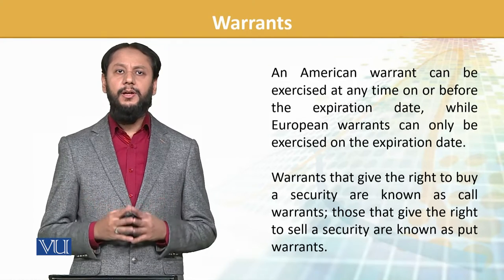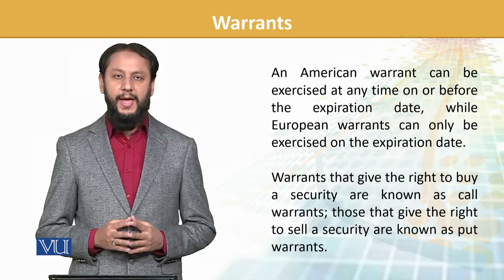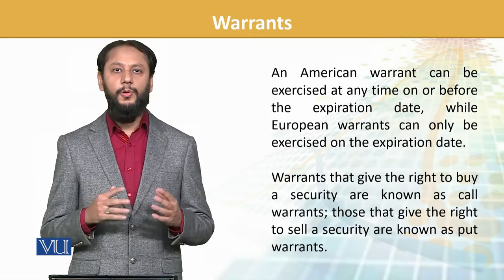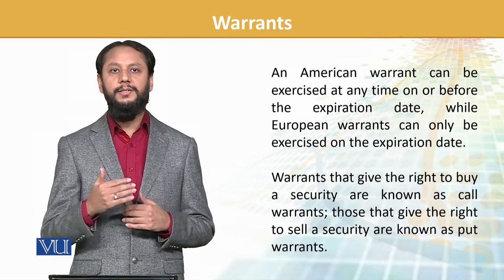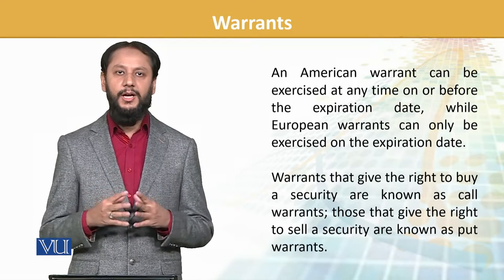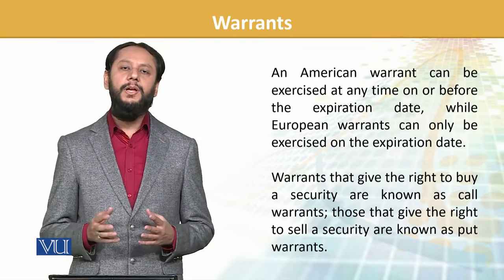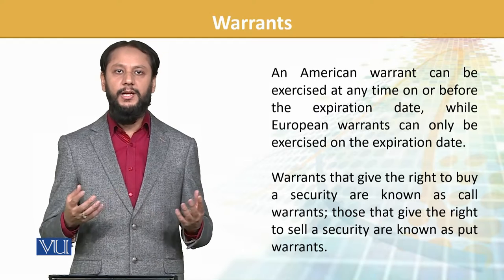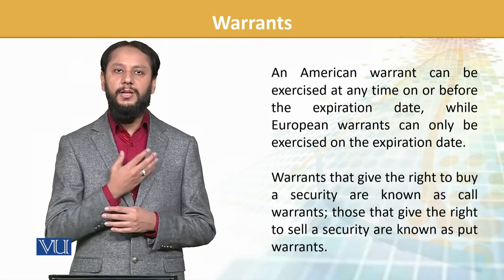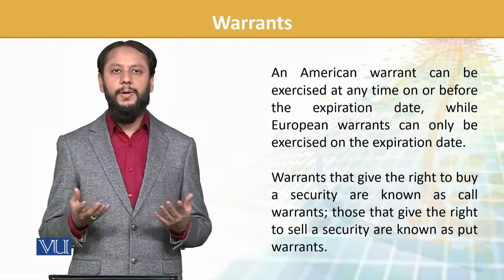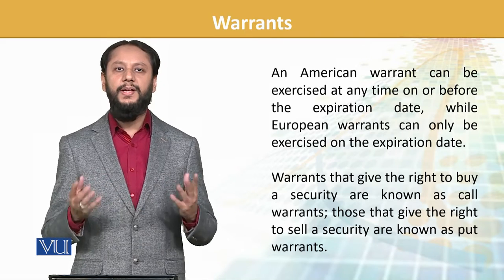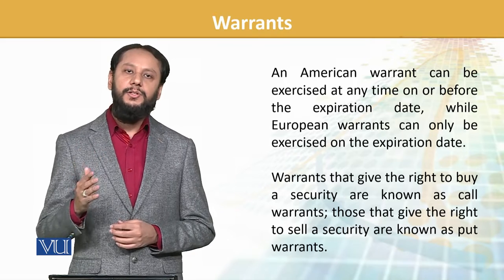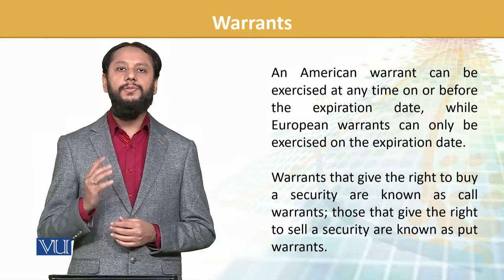There are two types, similar to what we discussed before — one is American and one is European. These are not related to countries or where they are traded; they are types with their own features. American warrants can be exercised at any time during their term — if it's 6 months, they can be exercised on any working day within that period. European warrants can only be exercised at the expiration/maturity date.